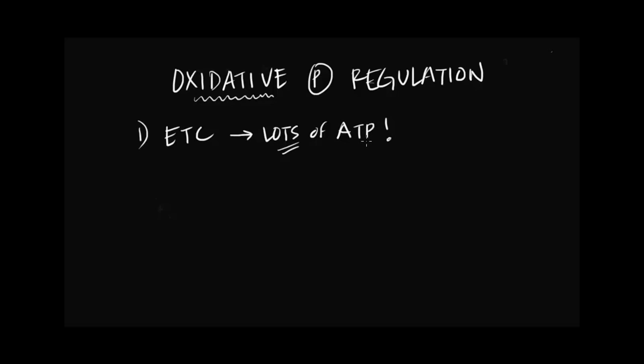For example, your brain and heart and some other tissues in your body really rely on the electron transport chain to produce most of its ATP. And the second point that's important to recognize is that oxidative phosphorylation is the common end pathway of aerobic respiration.